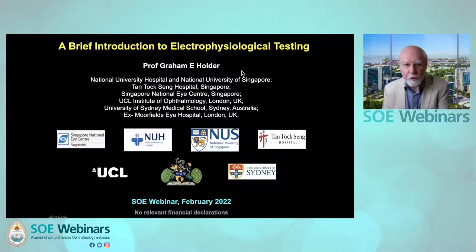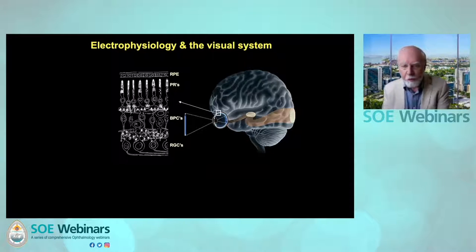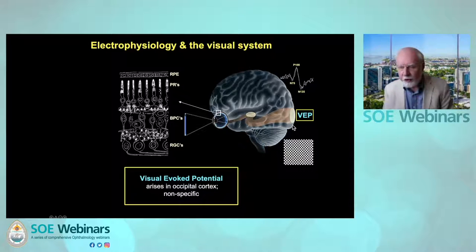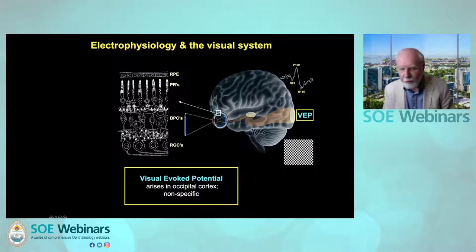Good evening. We'll start with an introduction to electrophysiological testing. You will be familiar with the anatomy of the visual system. The visual evoked potential — the response to a reversing checkerboard or to a luminance stimulus — arises in the occipital cortex but is nonspecific. Arising at a cortical level, it can be affected by anywhere anterior in the visual pathway to the cortex, including the chiasm, the optic nerve, but also the macula, inappropriate refraction, and media opacities.